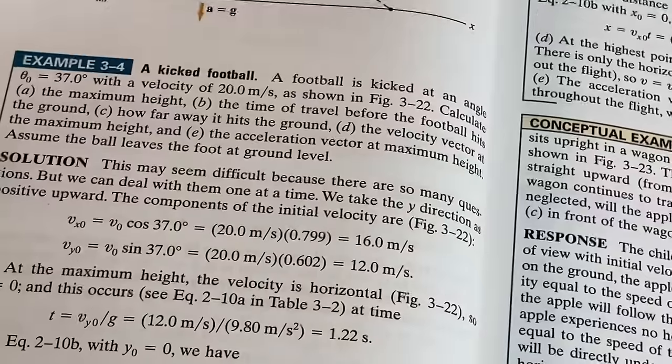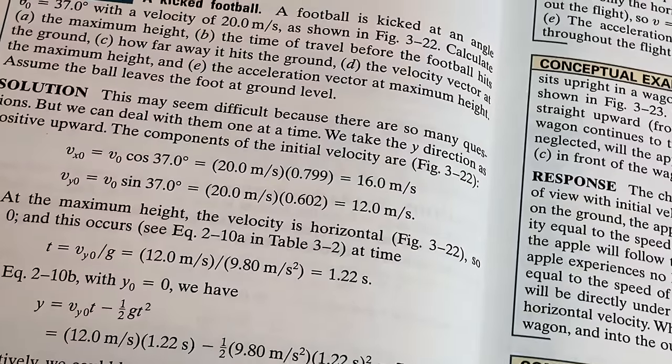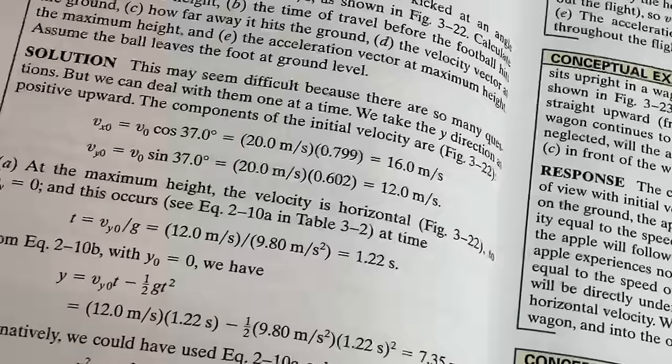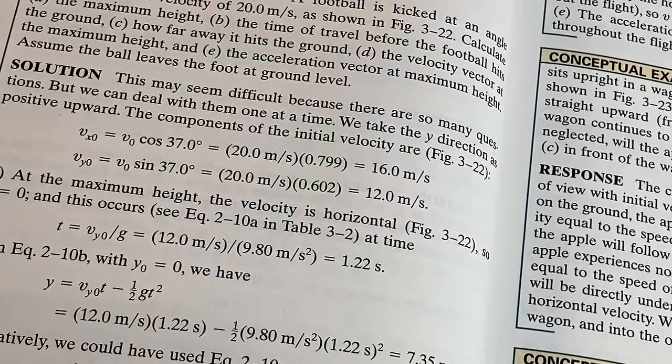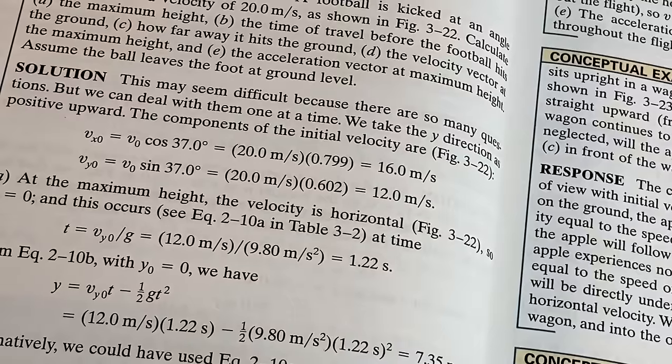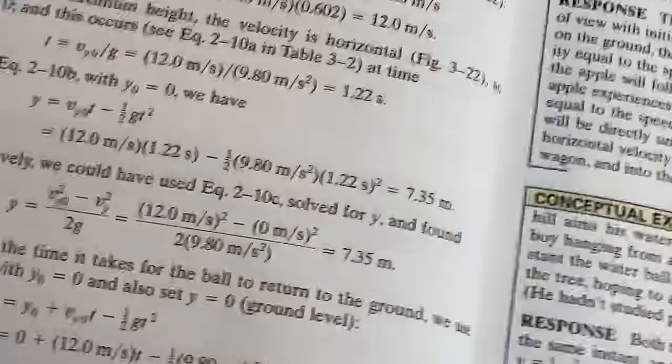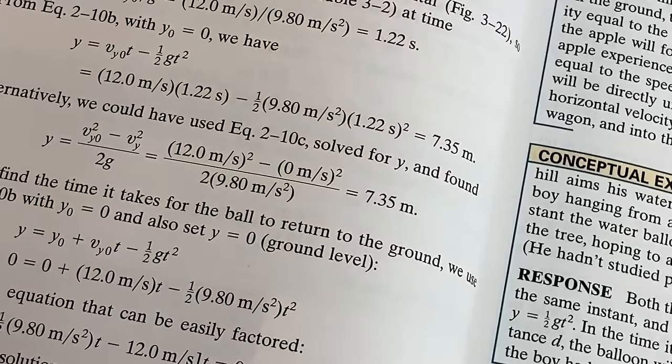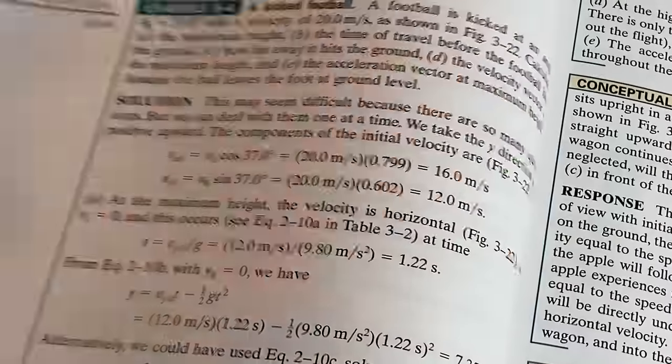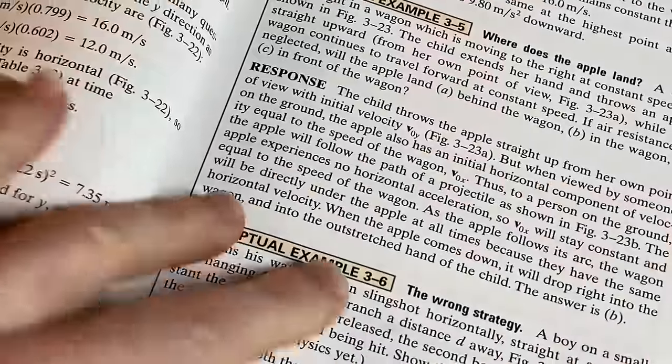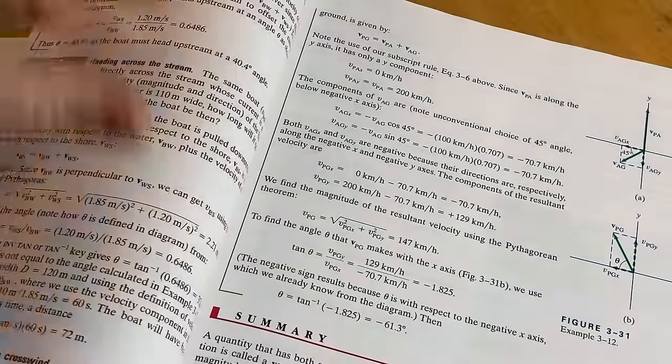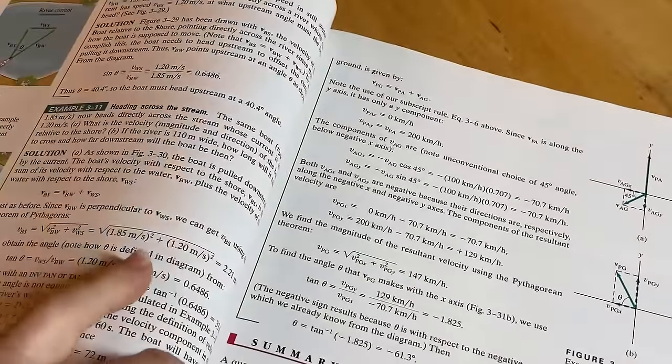And it just goes through everything, gives you formulas. It says 'this question may seem difficult because there are so many questions, but we can deal with them one at a time.' I love Giancoli, it's great. I don't know why I thought that was so funny. 'We take the y direction as positive upward. The components of initial velocity are...' So it goes through, uses the formulas. 'At maximum height the velocity is horizontal, so v sub y is equal to 0, and this occurs at the time...' So it goes through and it just explains everything really well. It's a really good book. The use of color is good too, like in the pictures. It's just a modern textbook on physics. You can look at all these examples - it's just great. You can sit down and actually learn physics with this book. Look, even more - look at all these examples, it's ridiculous. So you get a lot of examples with a book like this, which I think is important.